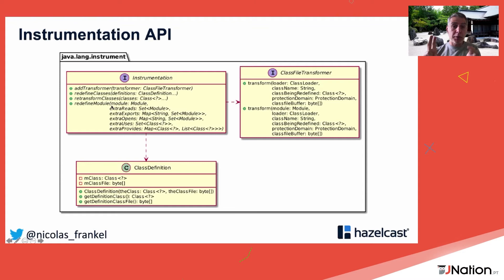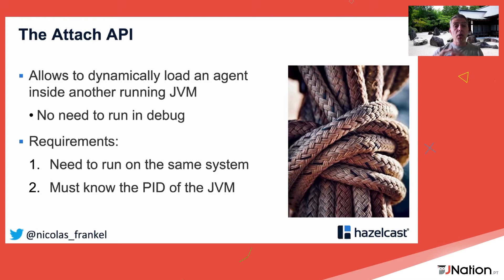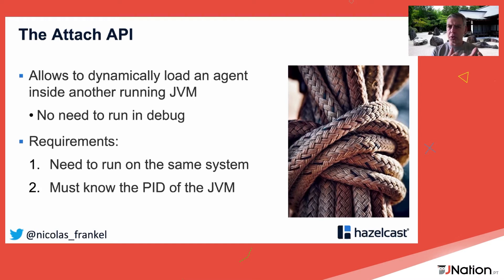For the Attach API: when you have a dynamic agent, you need a way to pass it to a running JVM. You have a production JVM running normally with no debug mode, no open ports. A second JVM uses the Attach API to inject the dynamic agent into it. The second JVM loads the agent and then stops.